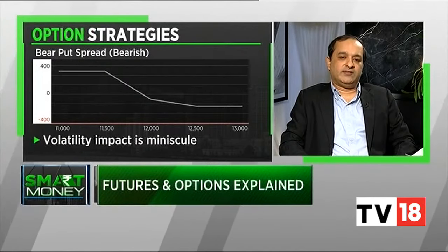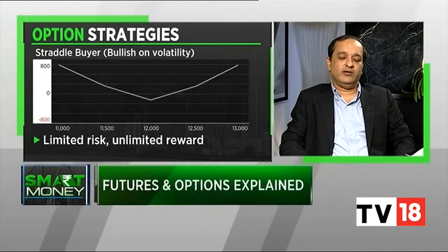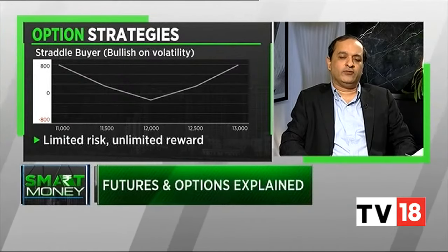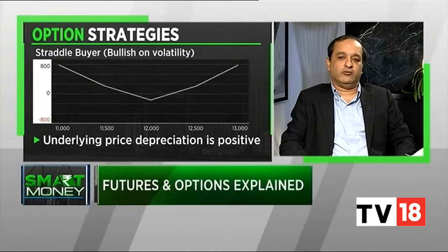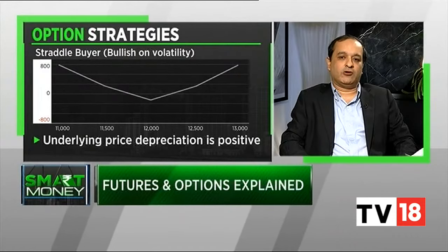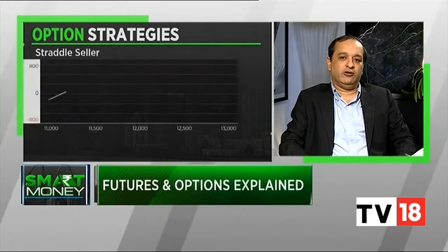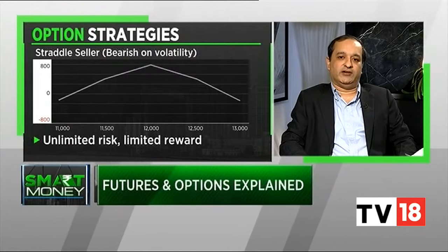Another strategy uses volatility as a key aspect. Suppose the stock is trading at 135 and I believe it's ready for a big move but I don't know which direction — upside or downside. I could buy both a call and a put on the same stock. If the price falls to 120, I make 15 rupees on the 135 put while my call expires worthless. If the price goes to 150, I make money on the call and my put expires worthless. Buying both a call and a put without knowing the direction is called a straddle.